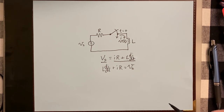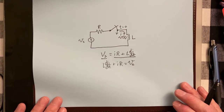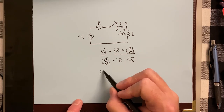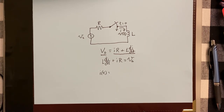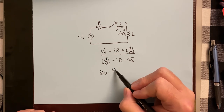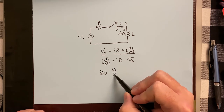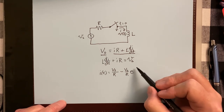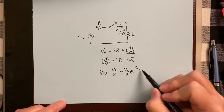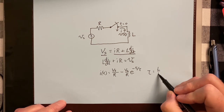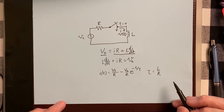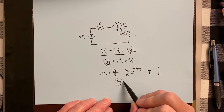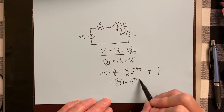You can still solve this one with separation of variables because V sub S is actually a constant. This isn't the differential equations class, but we use differential equations here. When you go through the steps to solve that, you end up with I as a function of time equal to V sub S over R minus V sub S over R times e to the negative T over tau. Tau is exactly the same thing — it is L over R.